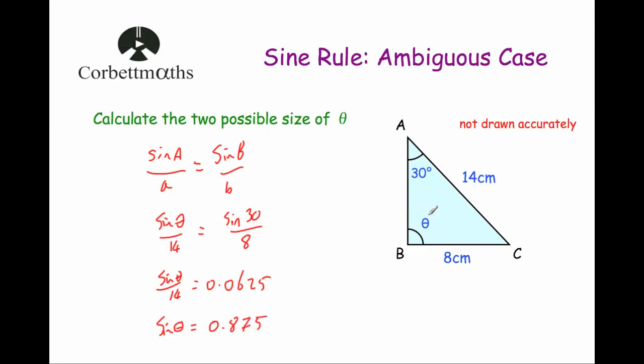So that means that the sine of this angle is 0.875, and that's true actually for the two possible values of this angle. Whenever you find this angle and you work out the sine of it, for each of the two values that it could be, the answer would be 0.875. Let's work out one of those now.